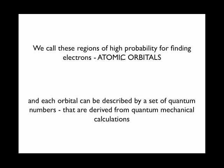Each orbital can be described by a set of quantum numbers that are derived from quantum mechanical calculations. The goal of this is not to have you memorize these quantum numbers and be able to reproduce them, but to give you an understanding of how they are used.